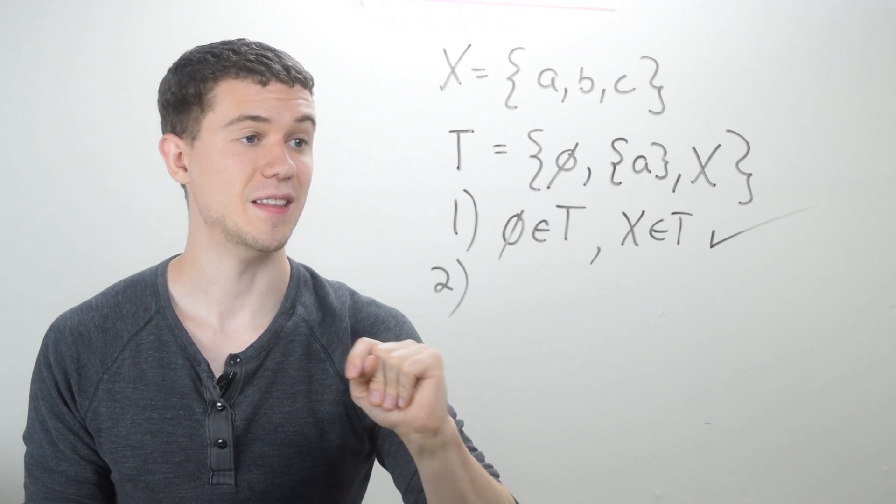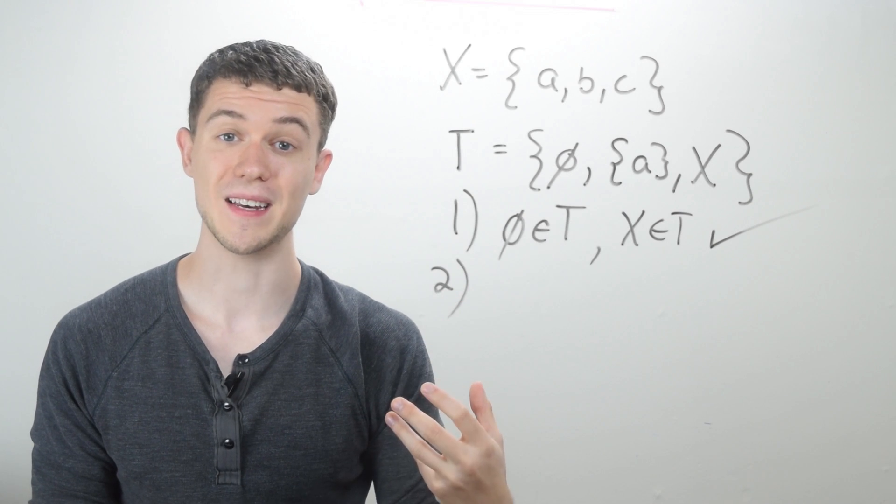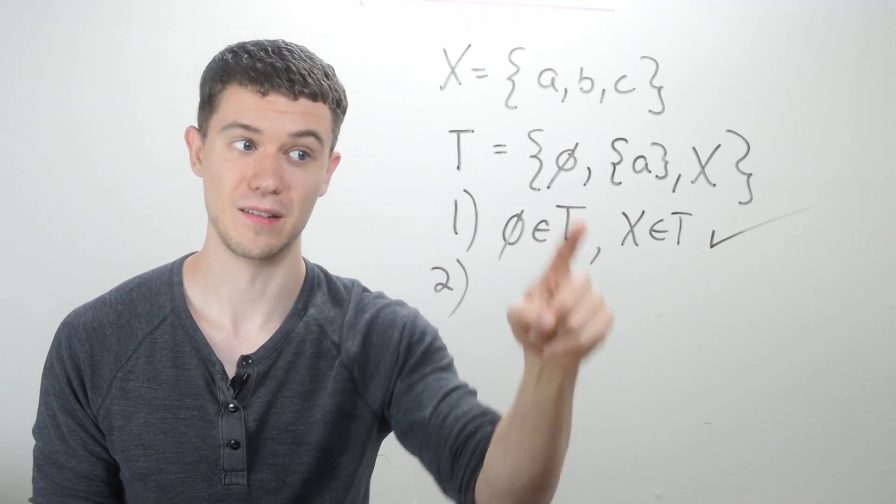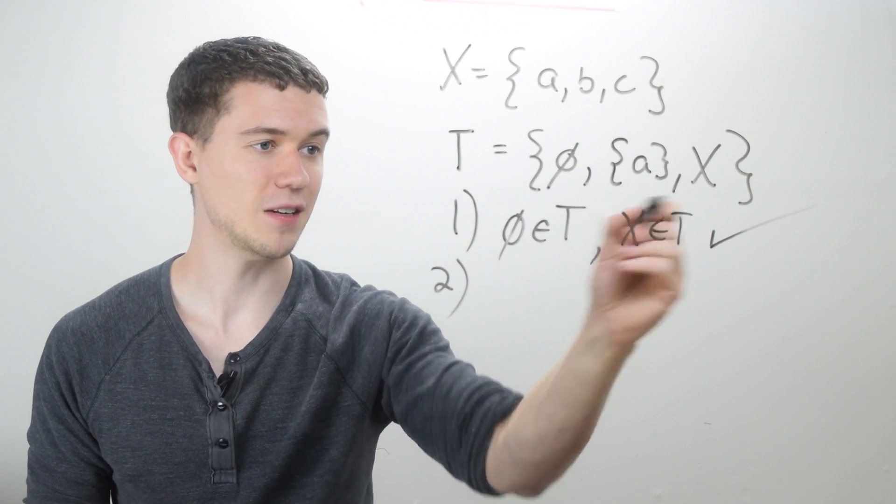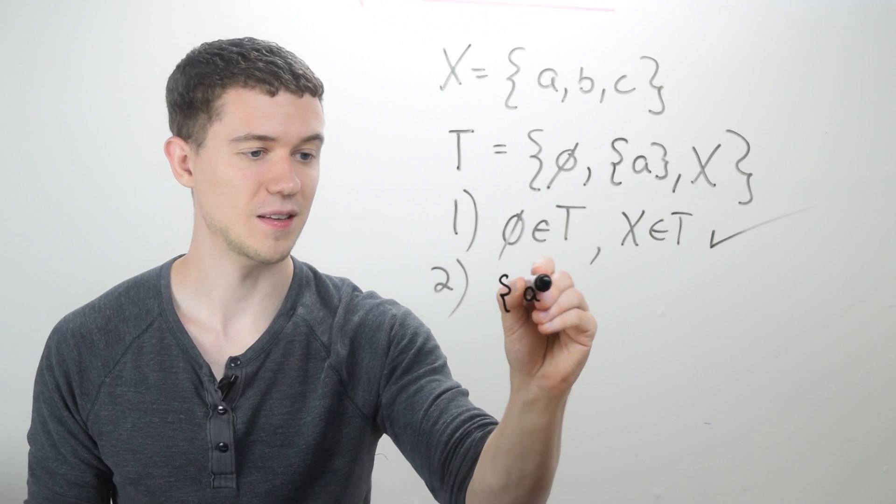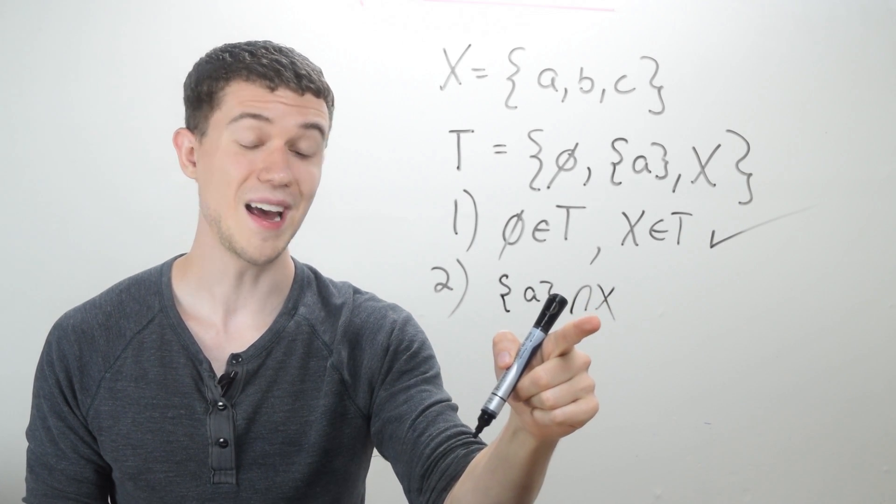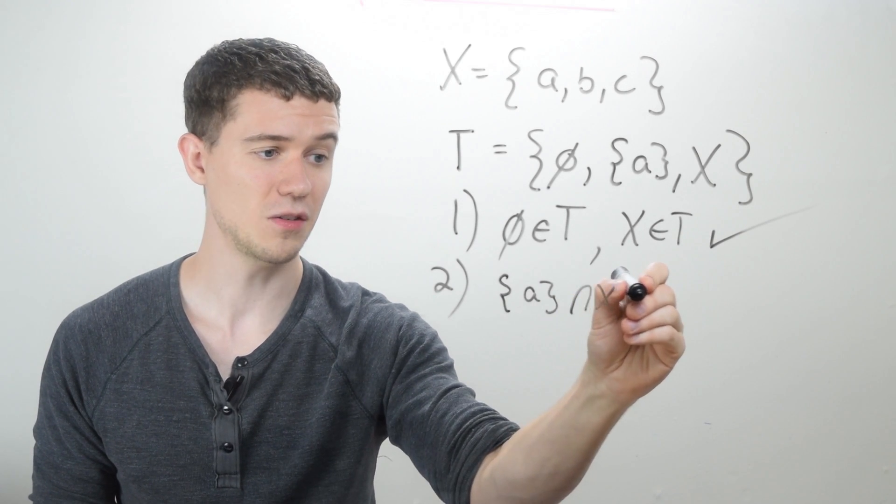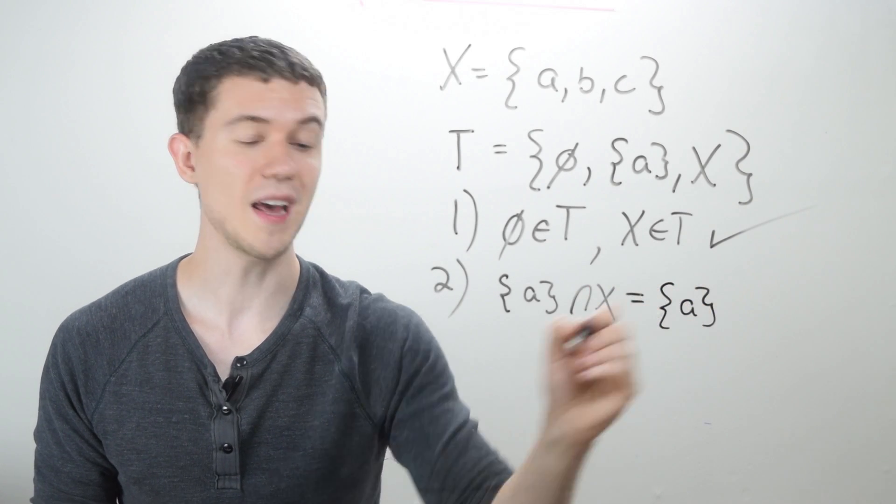If I intersect the set containing A or the set X with the empty set, I get the empty set, which is an element of T. So we're good with this. What happens if I intersect the set A with X?